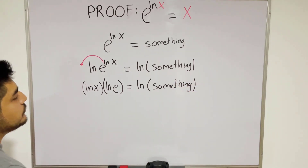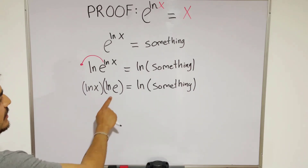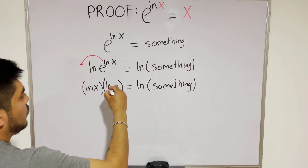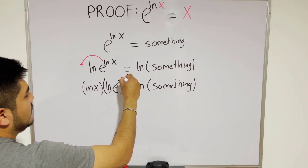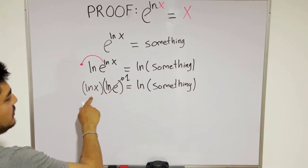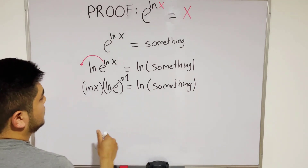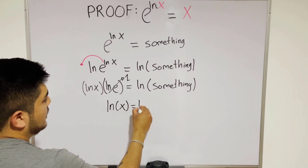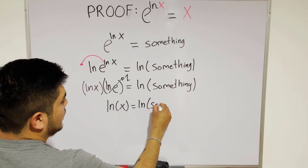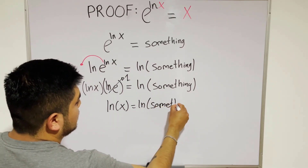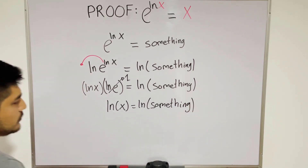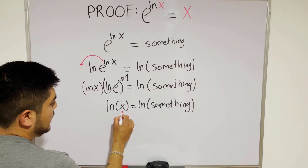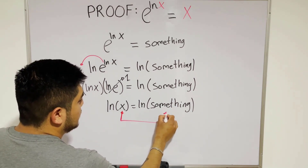What about ln e? You know that ln e equals 1, right? So 1 times ln x equals ln something. Therefore ln x equals ln something, and now x has to be something.